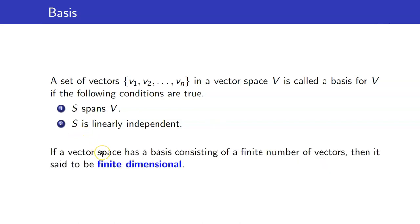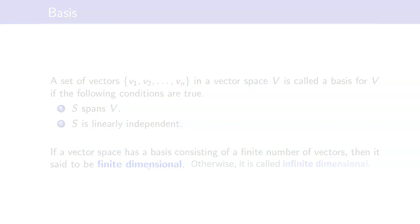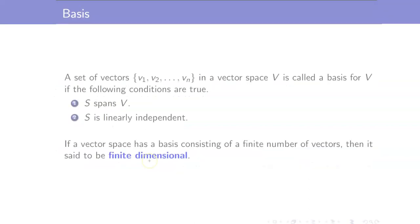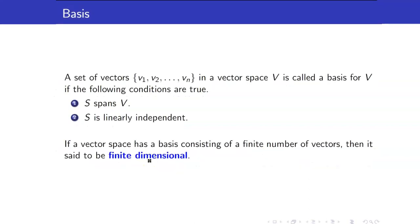If a vector space has a basis consisting of a finite number of vectors, then we say that it is finite dimensional. Otherwise, it is called infinite dimensional. In this course, we will only be talking about finite dimensional vector spaces.